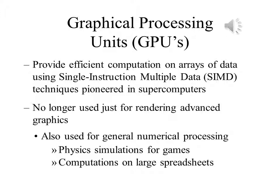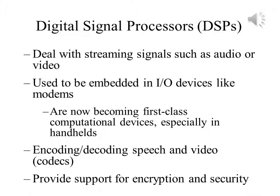Processors and GPUs are not the end of the computational story for the modern PC. Digital signal processors, or DSPs, are also present for dealing with streaming signals, such as audio and video. DSPs used to be embedded in I/O devices like modems, but they are now becoming first-class computational devices, especially in handhelds. Other specialized computational devices, or fixed function units, coexist with the CPU to support other computations, such as encoding or decoding speech and video, known as codecs, or providing support for encryption and security.